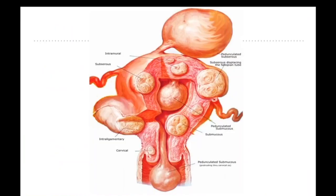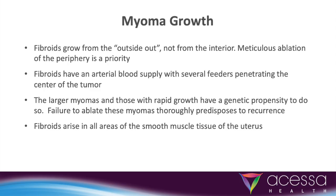Here is another image of fibroids in various locations throughout the uterus. Fibroids grow in a predictable fashion, although growth rates are dependent on each individual fibroid's genetic makeup. They grow from the outside out, therefore ablation of the periphery is important.